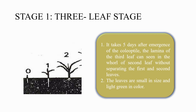Stage 1 is the three leaf stage. It occurs five days after the emergence of the coleoptile. The lamina of the third leaf can be seen in the wall of the second leaf without any separation between the first and second leaves. The leaves are small and light green in color at this stage.